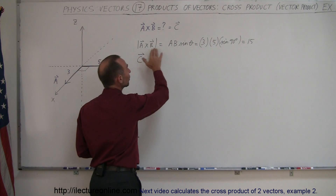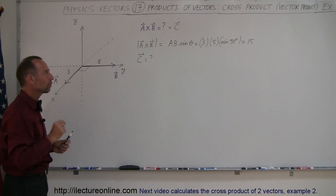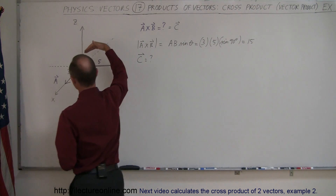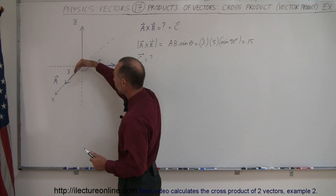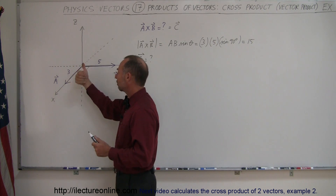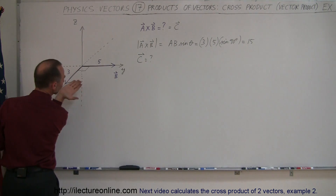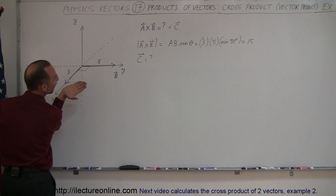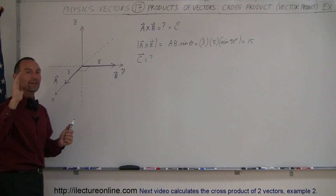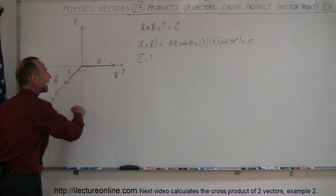If we do B cross A, the magnitude would be exactly the same — 5 times 3 is the same as 3 times 5 — but the direction of the resultant vector would be different. One way to figure out the direction is to use the right-hand rule: point your fingers in the direction of the first vector A, curl them toward the second vector B, and your thumb points in the direction of the resultant. For A cross B, the resultant is in the positive z direction. For B cross A, point fingers toward B, curl toward A, and your thumb points downward — the negative z direction. Remember to always use your right hand.